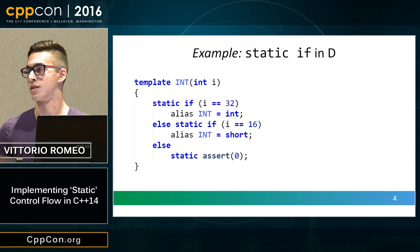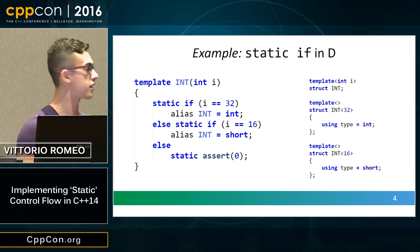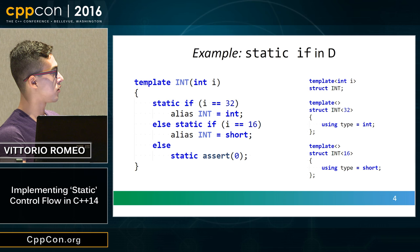How would you implement this in C++? The easiest way is a normal template specialized over the integer. You can already see the difference: in D it doesn't care about scopes, while in C++ it's easier to understand because the compiler specializes between the two templates with no weird rules about static if.